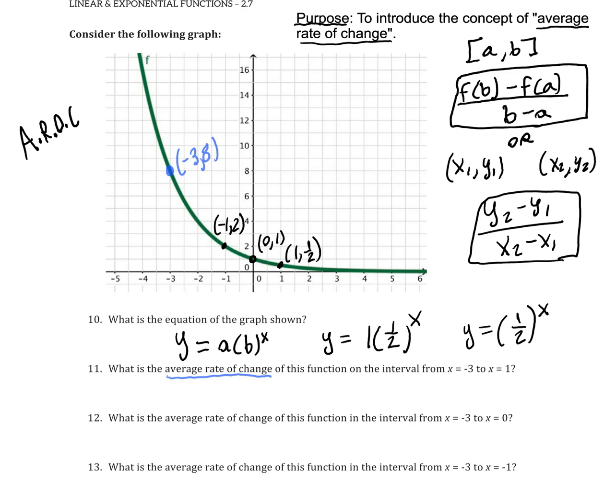In other words, if I want to use the first formula f(b), well f(-3) is 8—I'm sorry, that's f(a), and this is a and this is b. And so f(b), f(1), is 1/2. So to find the average rate of change we would be looking at 1/2 minus 8 divided by 1 minus (-3).